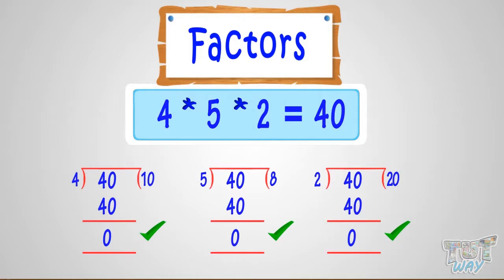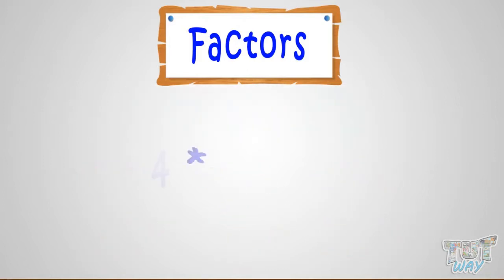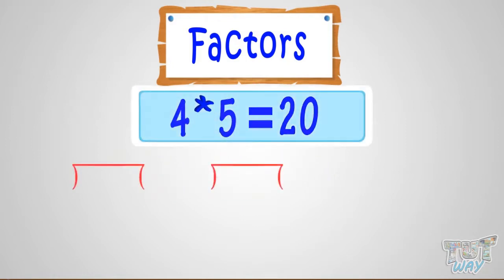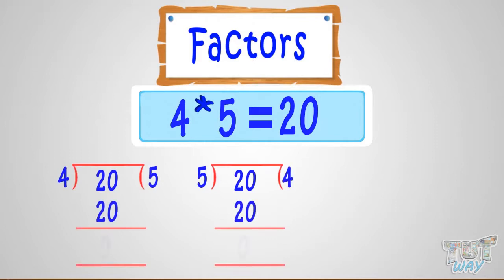Let's have a look at more examples. 4 multiplied by 5 equals 20. So here, 4 and 5 are factors of 20. 4 and 5 can divide 20 completely — no remainder will be left.